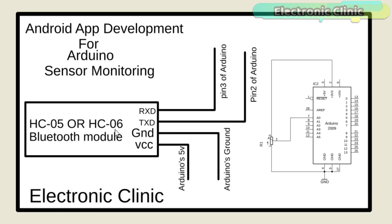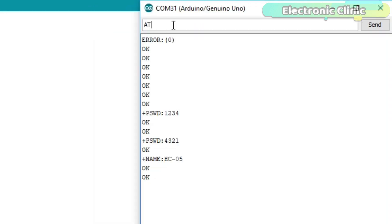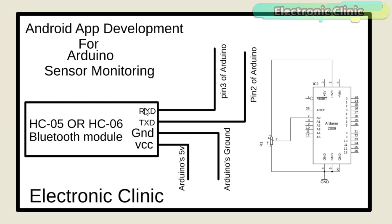If you are using a Bluetooth module for the first time, you can watch my getting started tutorial. The link is in the description, which completely explains how to change the name of the Bluetooth module and how to change the pairing code. The Bluetooth module TX and RX pins are connected with Arduino pin number 2 and pin number 3, while the VCC and GND pins are connected with the Arduino 5V and GND.